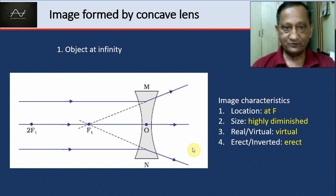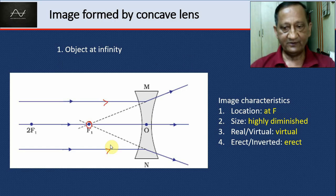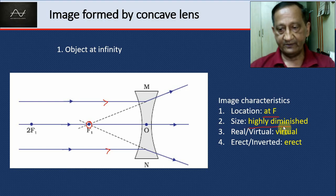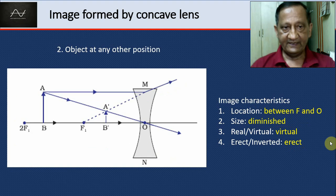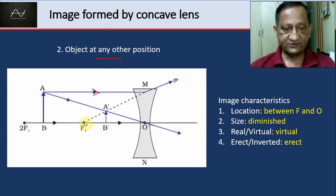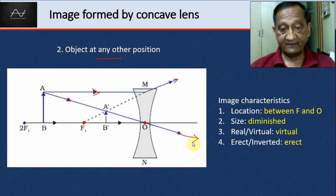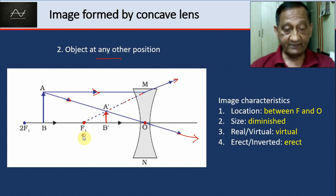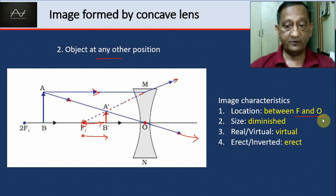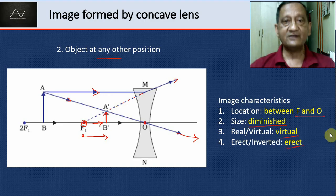The concave lens is simpler — there are only two positions to consider. If the object is at infinity, the rays diverge and seem to come from the focal point, so the image is at the focal point: highly diminished, virtual, and erect. For any other object position, the image forms between F and O. It is still diminished and virtual and erect because the rays are not actually intersecting.